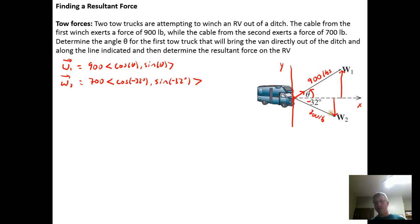And there's the vector W sub 2 pulling on the RV in this direction. And what we're wanting to do is to find an angle theta so that when we add the vertical components, it equals zero, which means the van won't move up or down because there will be no net force in the vertical direction. And that means the resultant force will be just along the horizontal, which is what we want to move the van directly out of the ditch.